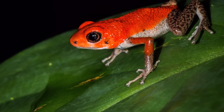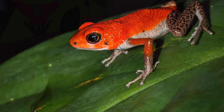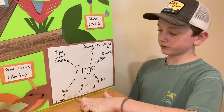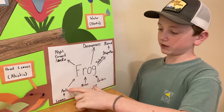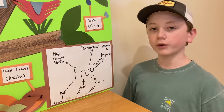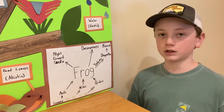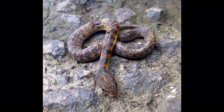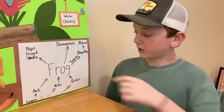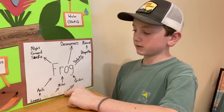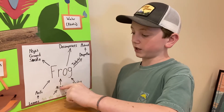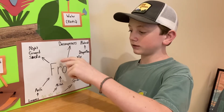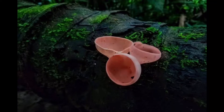Let's take a look at the food web. The ants eat the leaves and plants, and the adult frog eats the ants. The adult frog only has one predator because of the poison on its skin, and that predator is the night-ground snake. Mites eat the leaves and plants, and the frog eats the mites. Decomposer fungi will eat the frog's remains when it dies.